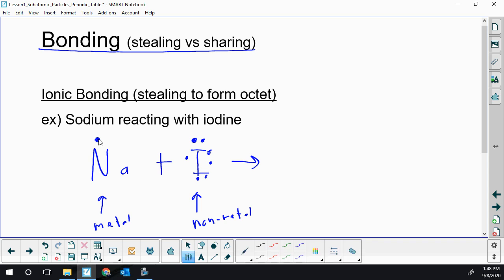What happens? You've got iodine missing one, it's going to take that one from sodium and put it there. Sodium gets an octet because it's gotten rid of that one electron in the third energy level, so then its second energy level is left full. Iodine fills up the one missing spot.